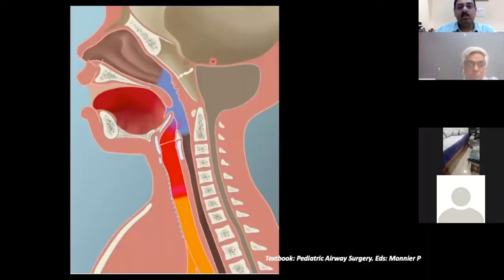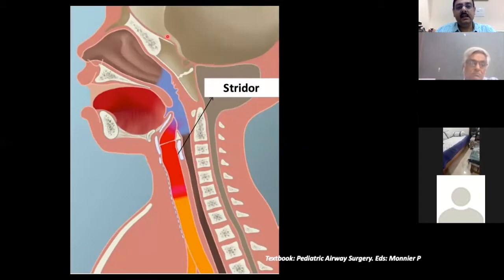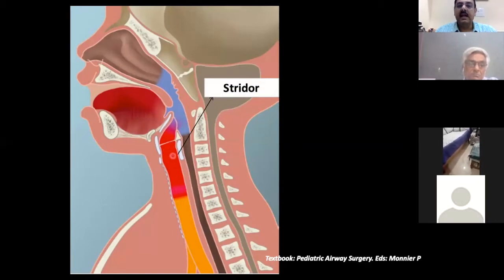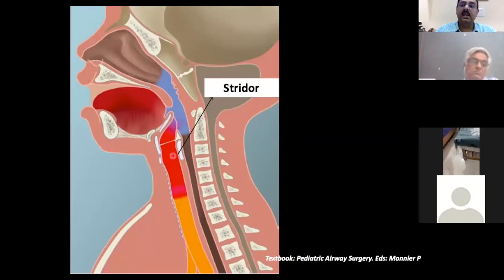This is what a pediatric airway looks like. The supralaryngeal area, the glottis, the subglottis, and the extrathoracic part of the trachea — this is the part of the airway which produces a sound called stridor. Stridor is basically a high-pitched sound and is usually inspiratory.